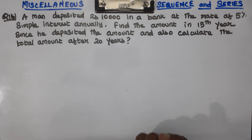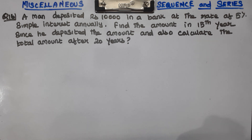The formula for simple interest is PNR divided by 100, where P is the principal, N is the number of years, and R is the rate of interest.